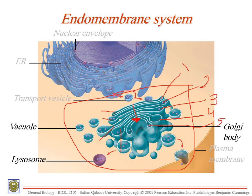A transport vacuole goes inside and binds to the first cisternae. The enzymes in each cisternae make a modification, then it moves to the next. It comes out in a different form — as a vacuole, or it continues its path and becomes a lysosome. Do you want to make a lysosome? A glycoprotein? A vacuole? Every sac in the Golgi body has a different specialization.